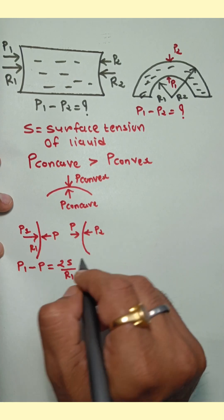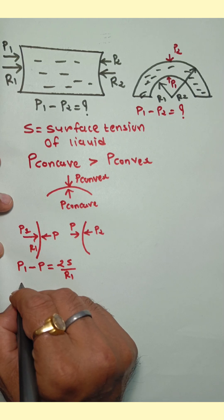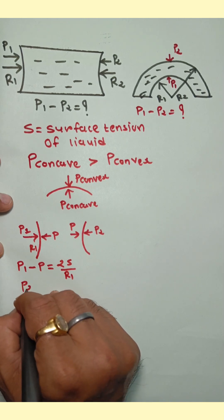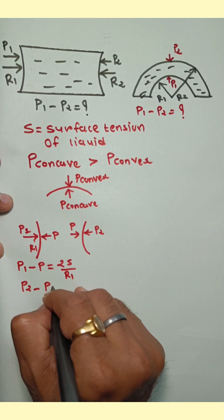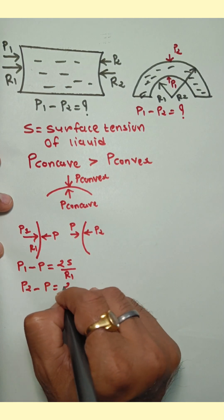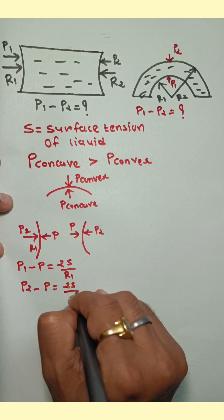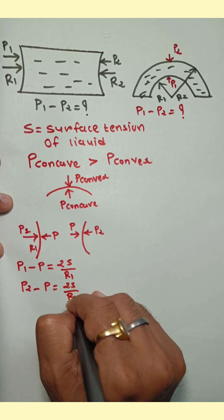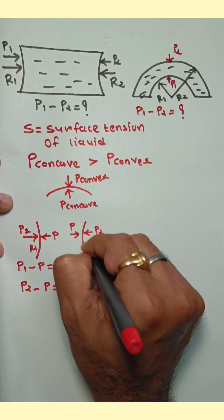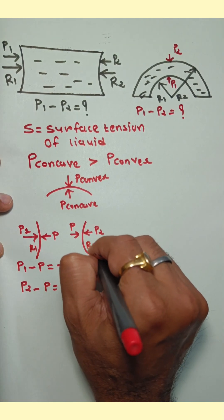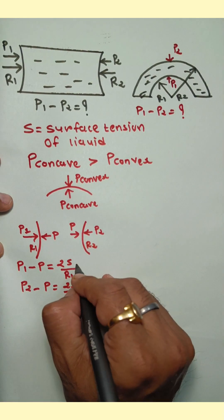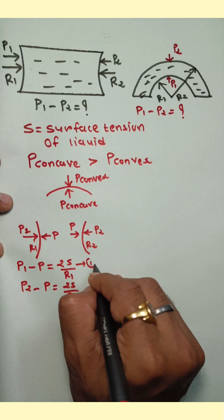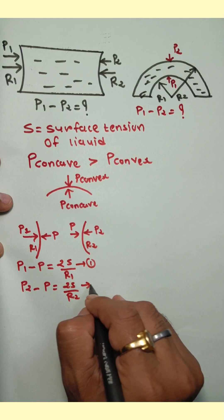Now for the second surface: pressure on the concave side, P2, minus pressure on the convex side, P, is equal to 2S upon R2, where R2 is the radius of curvature of that surface. This is Equation 1 and Equation 2.